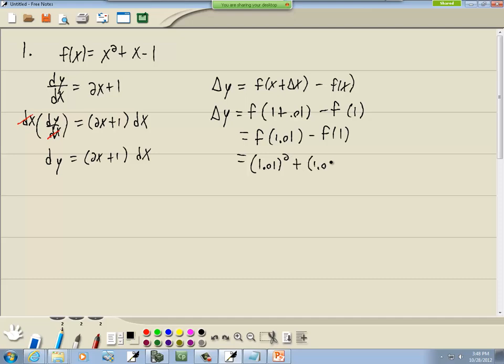So we'll take each one of those and plug them into our function. So we've got 1.01 squared, plus 1.01, minus 1, minus f of 1. So we'll put 1 in. So I've got 1 squared, plus 1, minus 1. 1.01 squared gives us 1.0201, plus 1.01, minus 1. 0.01, minus 1 squared, minus 1, plus 1 is 2, 2 minus 1 is 1, so minus 1. So that gives us 1.0301 minus 1, which gives us 0.0301.